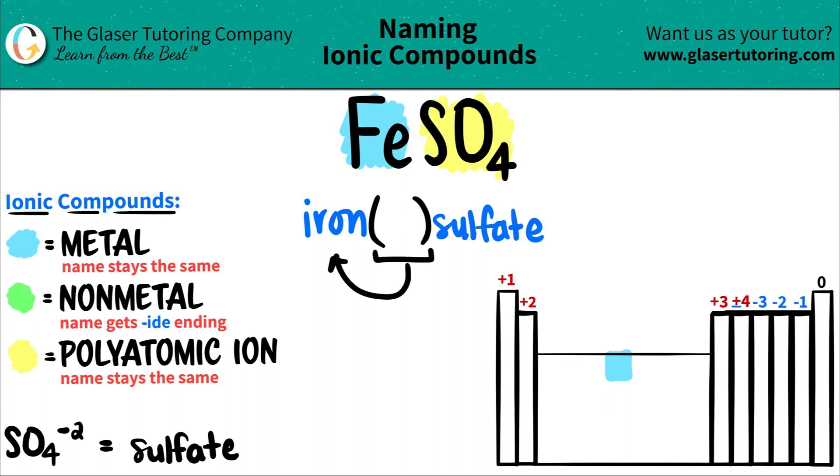The Roman numeral is always the charge of the metal. How do we get the charge? We take the subscripts and crisscross them back up to get the charges. There was one iron, and this four is with the polyatomic ion, so with parentheses I have one SO4. The one crisscrosses up telling me SO4 has a -1 charge, and this one crisscrosses up telling me iron has a +1 charge.